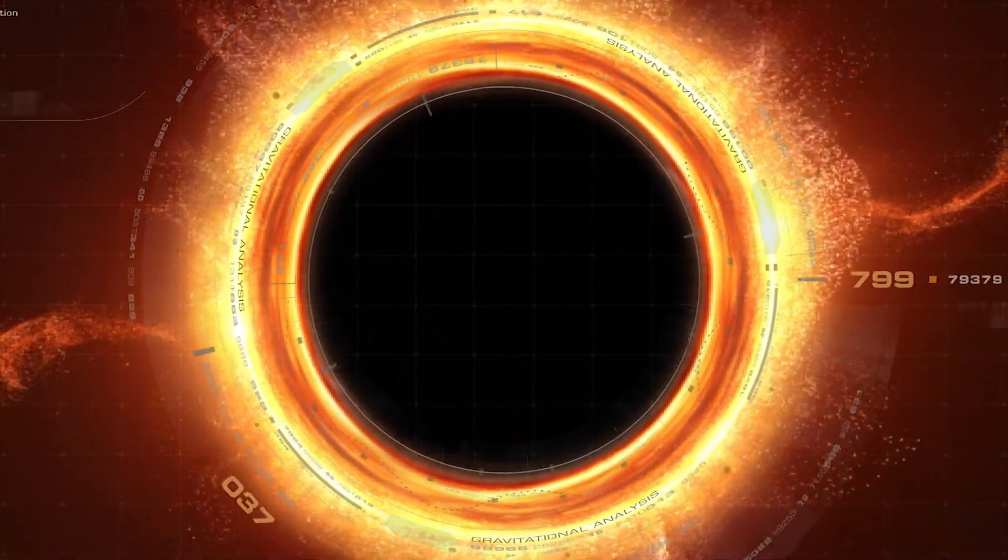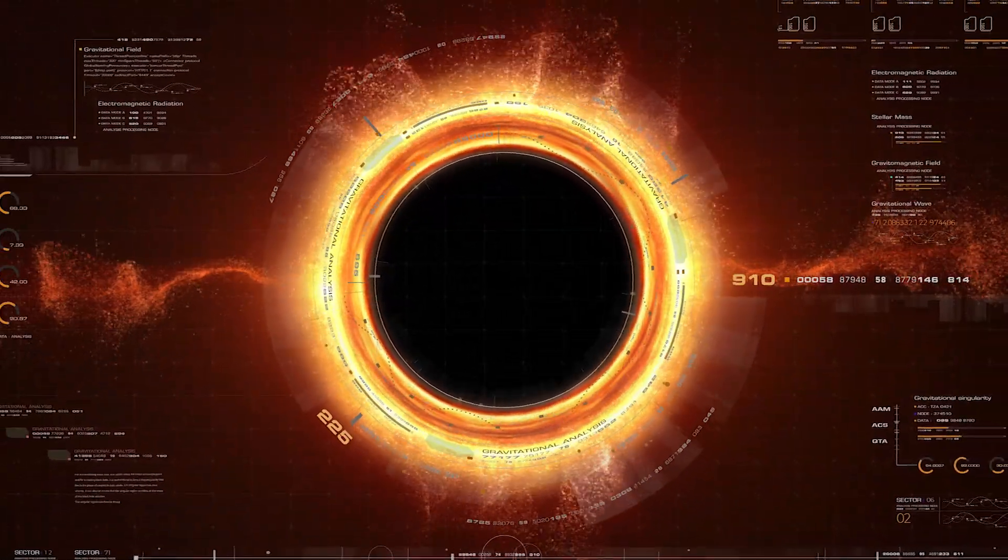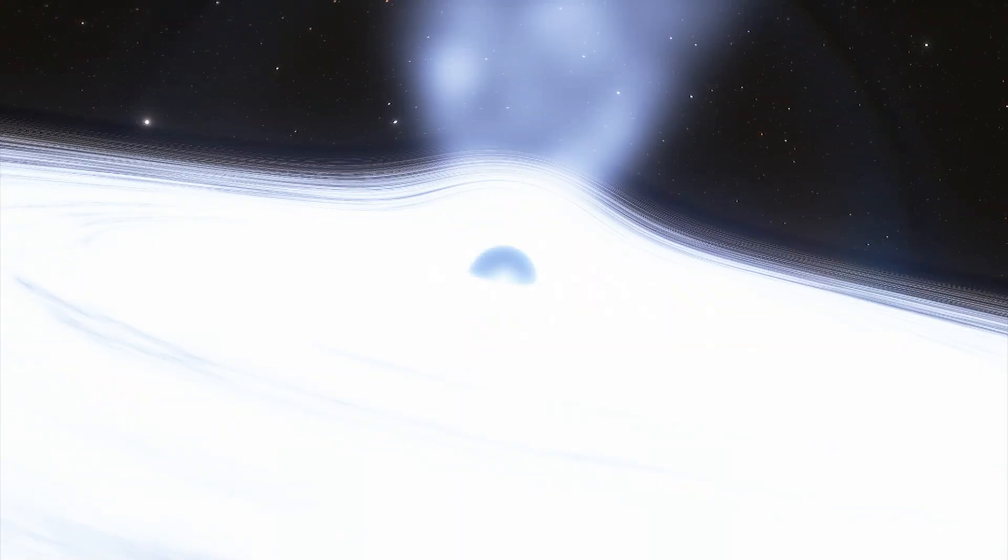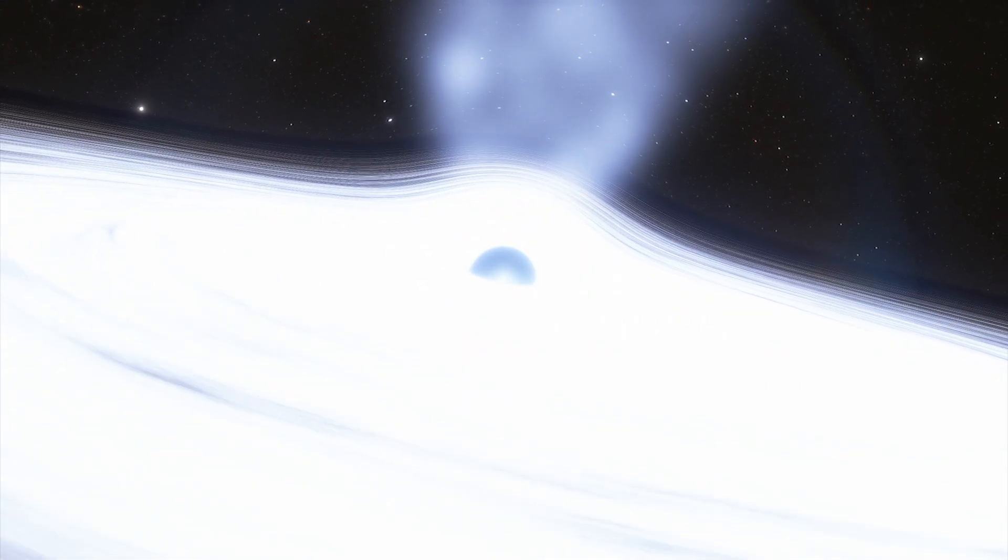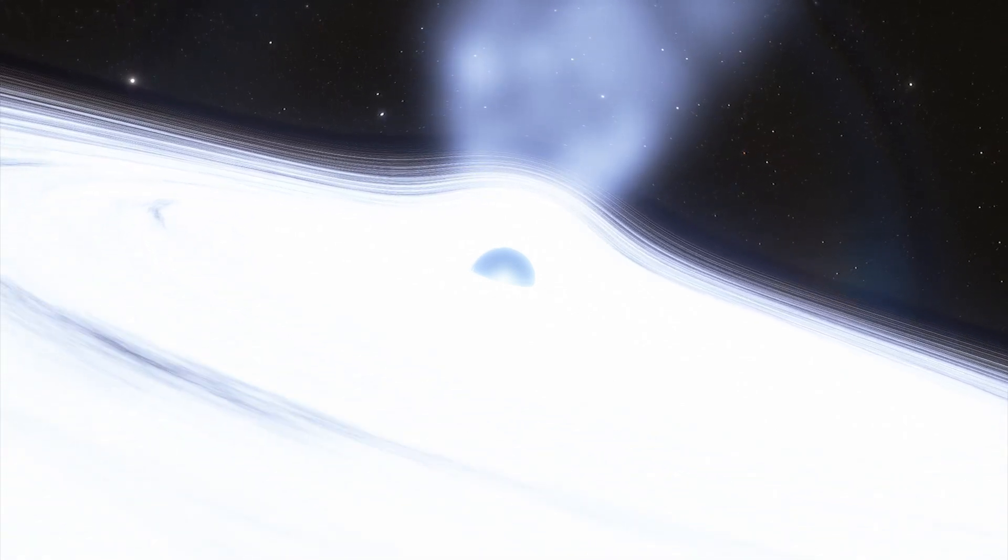The event horizon is the threshold around the black hole where the escape velocity surpasses the speed of light. To escape the black hole's gravity, you'd have to travel faster than light, which is impossible for any bit of matter.